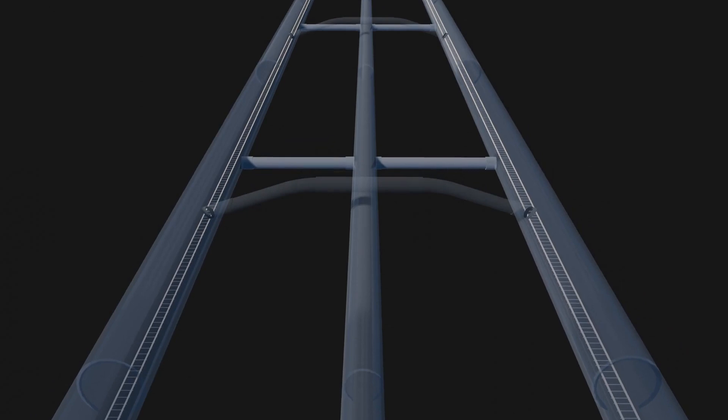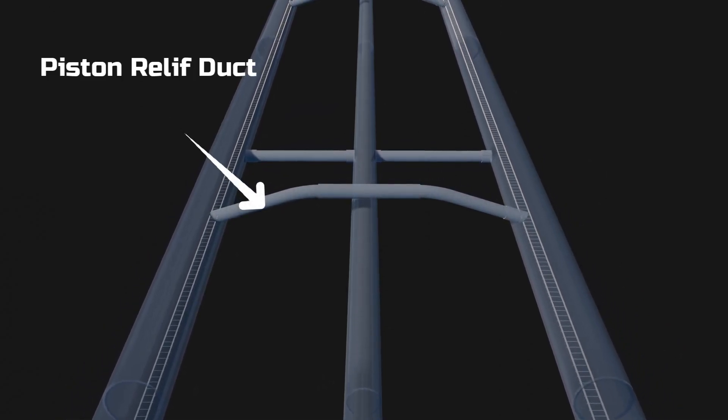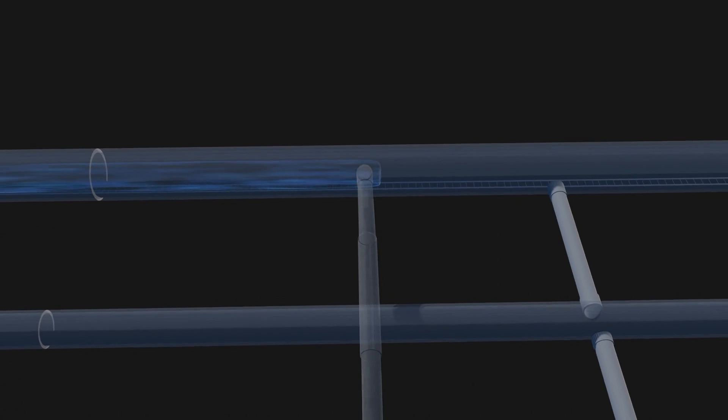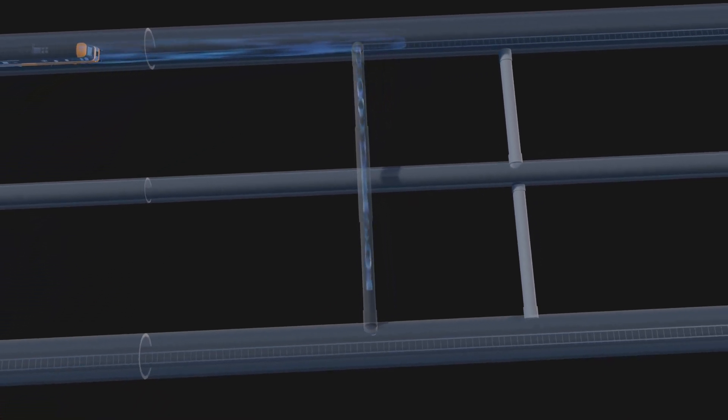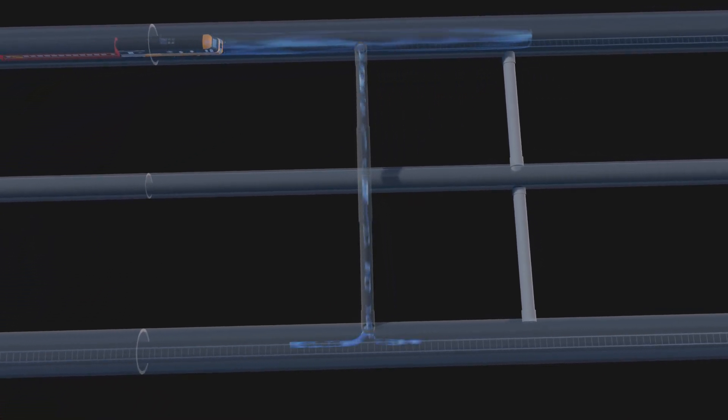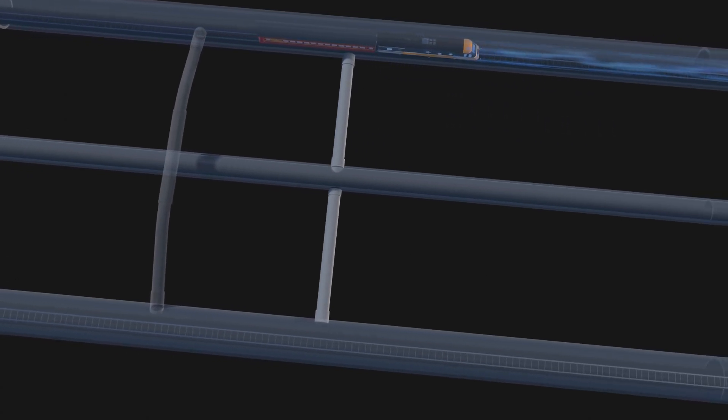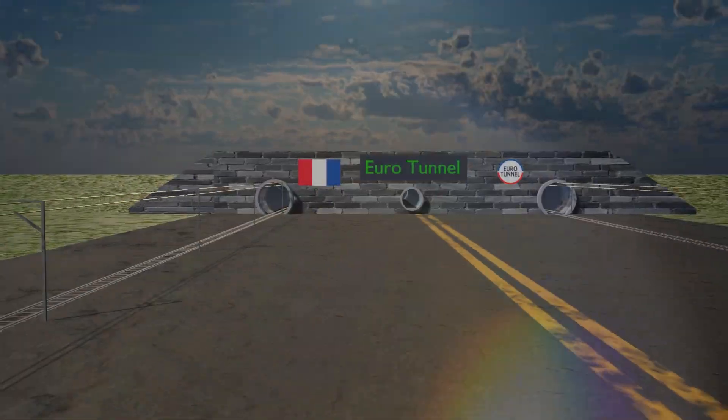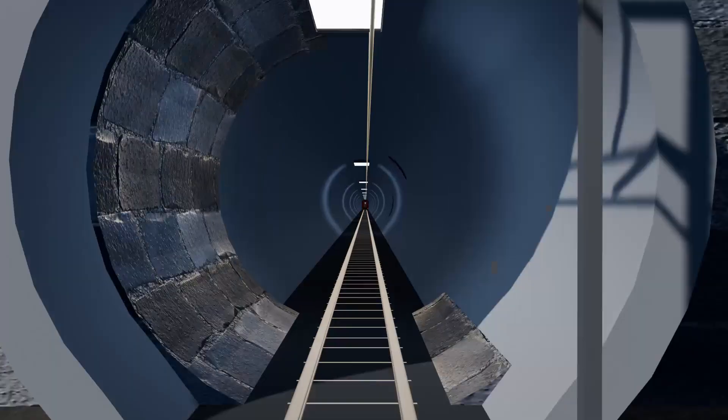To address this issue, piston relief ducts with a diameter of 2 meters were installed. These ducts allow air to flow through them when a train passes, distributing the air evenly to both sides of the tunnel. The only downside to these ducts is the flute-like sound they produce when a train is in motion. While noticeable, this sound does not affect the functionality or safety of the tunnel.